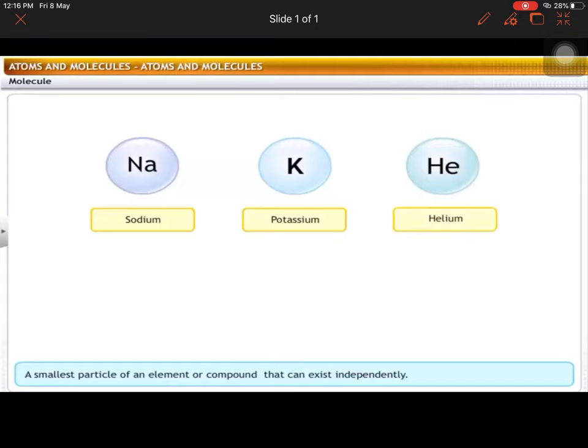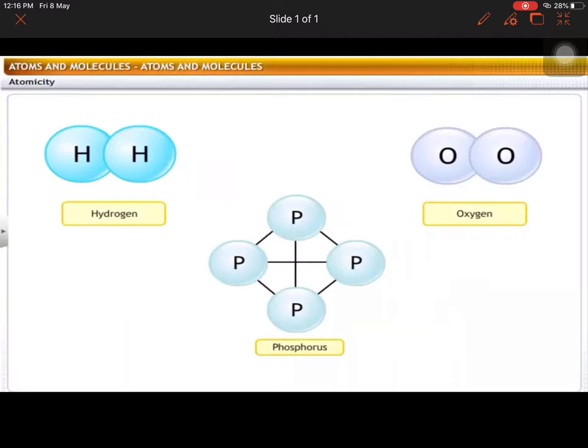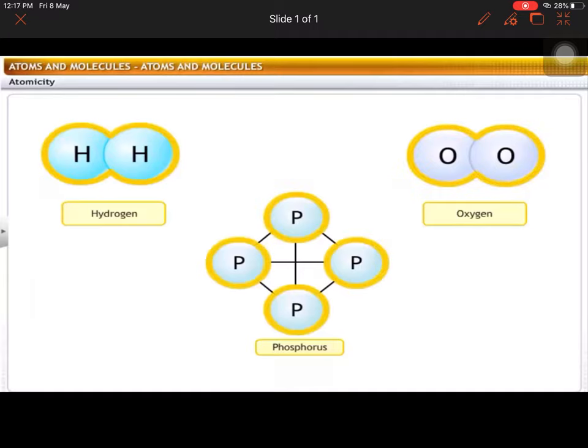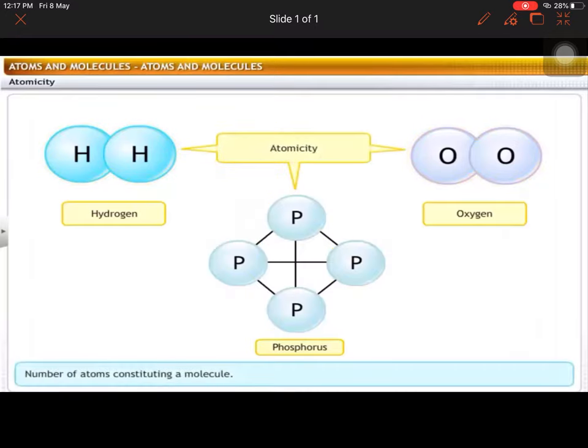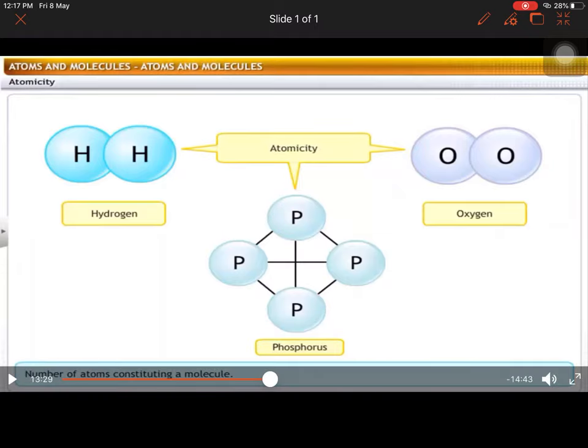Here, sodium and others like hydrogen, oxygen, etc. exist in a combined state. Atoms combine to form molecules. The molecules of an element are constituted by the same type of atoms. For example, elements like hydrogen, oxygen, phosphorus have more than one atom in a molecule. This number is specific for an element and is known as its atomicity. Thus, the number of atoms constituting a molecule is referred to as atomicity.